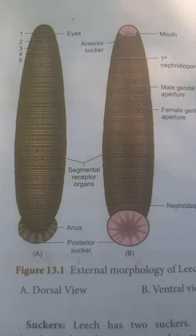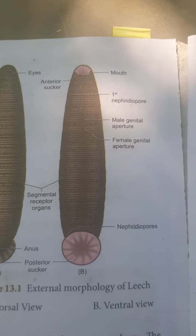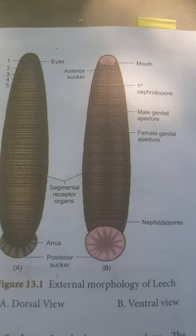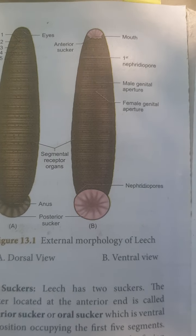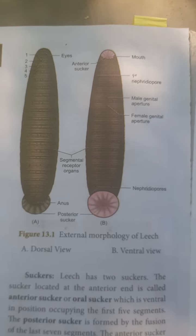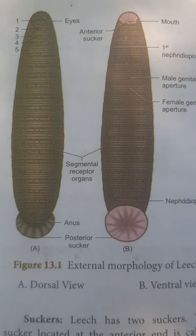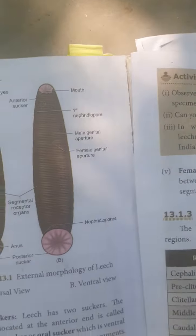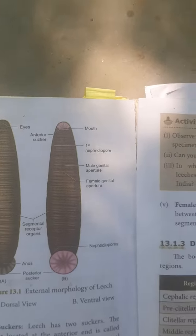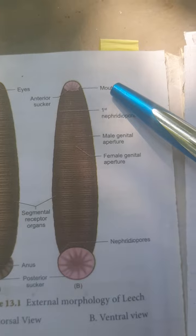Good morning. Today, 10th standard science 2, chapter 13 - structural organization of animals. We will look at invertebrate leech and vertebrate rabbit. See in the video photographs the leech. The leech shape is soft in nature, vermiform - vermiform means worm-like structure.